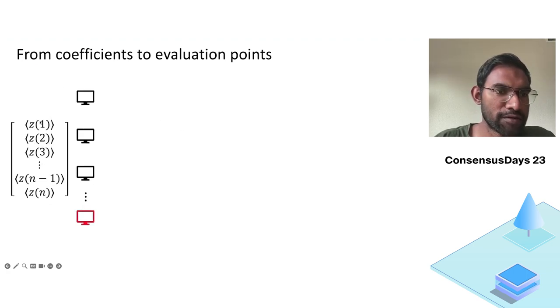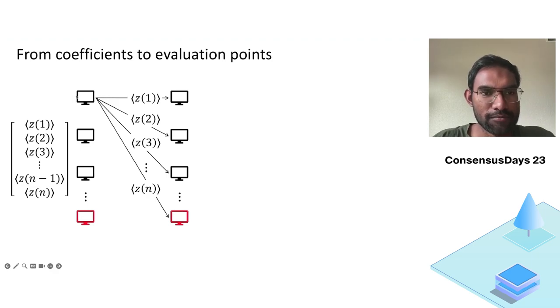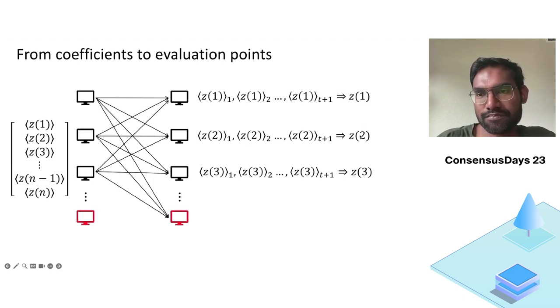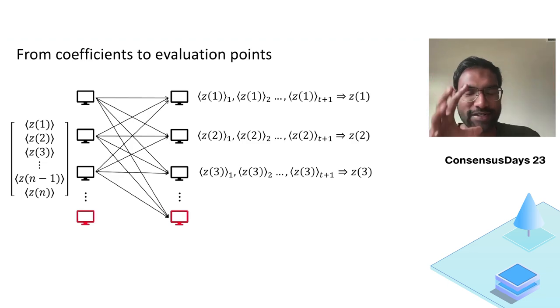So every party now has shares of everybody else's secret. But we don't want this state. What we want, we want party one to get z1 in the clear, party two to get z2 in the clear. But we can do this. We can do this using one simple round of interaction. Party one will send a share of z1 to party one, share of z2 to party two, so on and so forth. Everybody will do this. And then party one will receive shares of z1 from many nodes. Let's say the first t+1 of them without loss of generality. And it can just use Lagrange interpolation to output z evaluated at one in the clear. Similarly party two can do this. Everybody can do this. So this is our protocol. There are two parts: generate the coefficients and convert the coefficients to get the evaluation points in the clear.